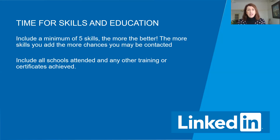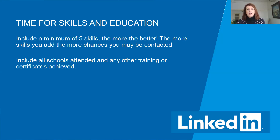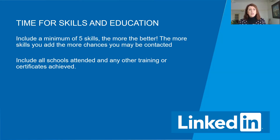Once you've done your summary, the next section is skills and education. We recommend that you include a minimum of five skills - the more the better. The more skills that you can add, the greater the chances of you being contacted. Also include the schools that you attended and any other training you've done or certificates you've achieved.